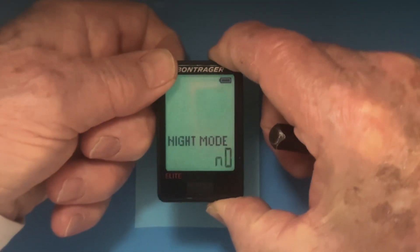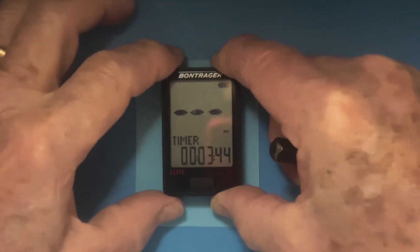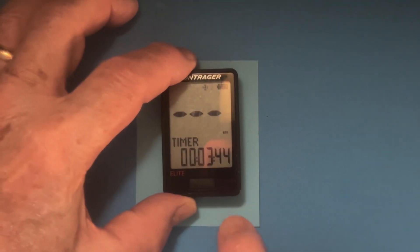Then you press the back button again and it takes you to your ride screen. You're now out of the night mode.